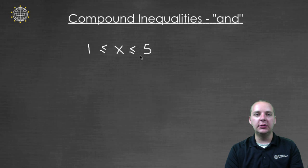If you look at this string of inequalities here, you'll notice that there are two inequalities. There's one here, and then one here. We can actually break this apart into two different inequalities. We have 1 ≤ x, and then we also have x ≤ 5. And both of these would have to simultaneously be true to be a solution to this string of inequalities.